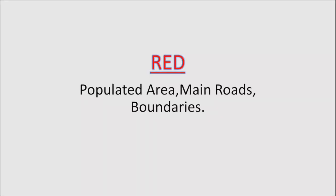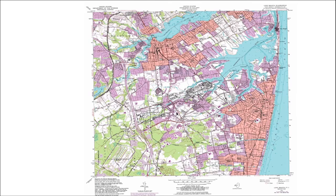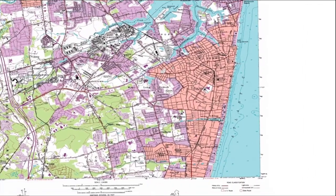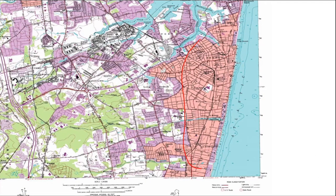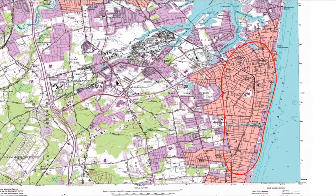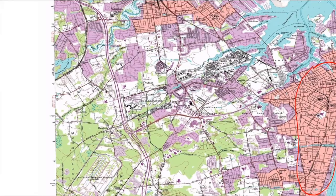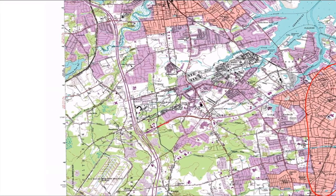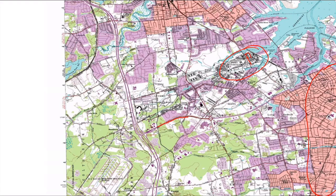Red. Red represents populated areas, main roads, and boundaries. We have this particular area here, which is a little city — it's in red. And the major road here is in red. You'll notice over here in black, the man-made areas — the smaller roads in this particular area are in black.